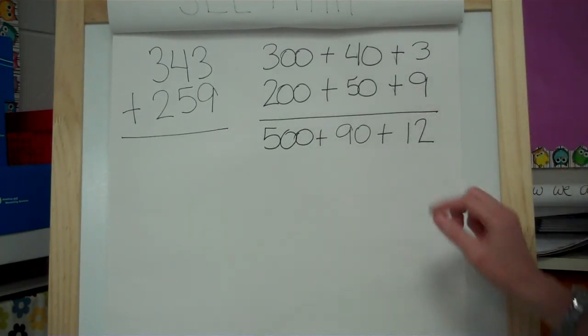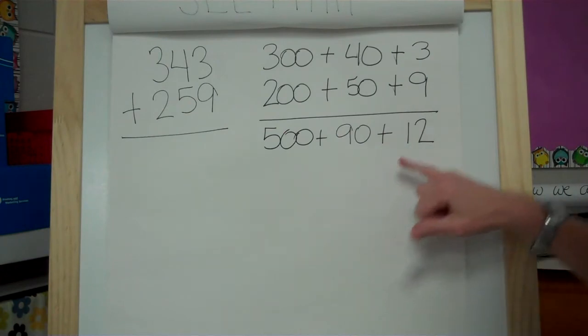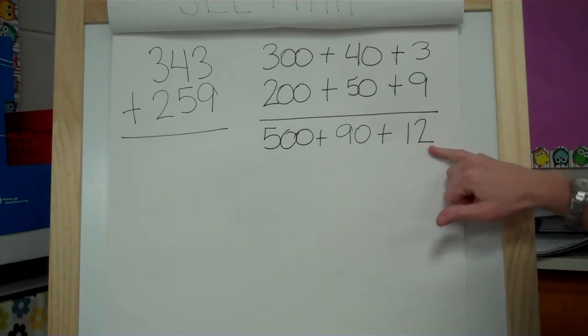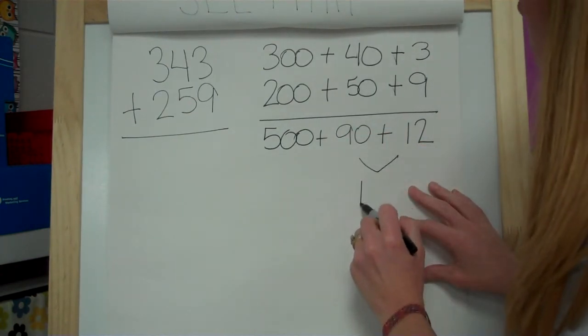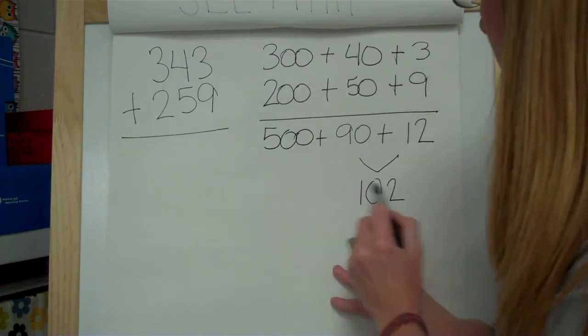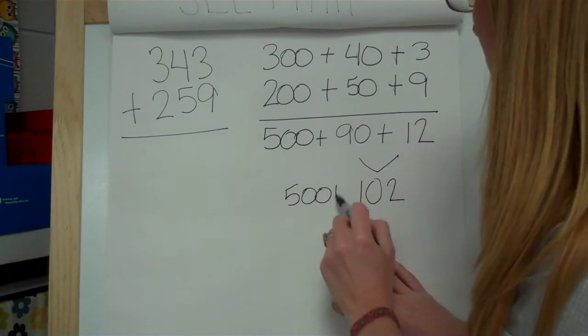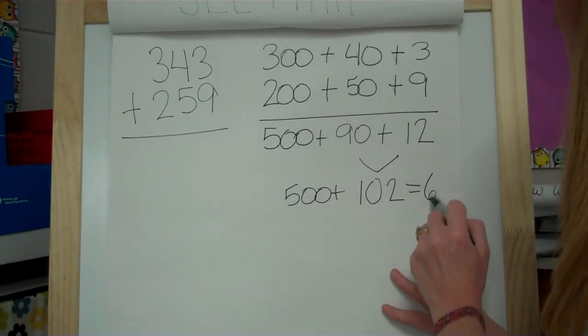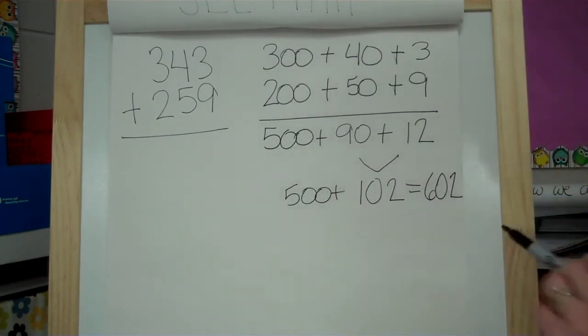Oh, now this one's going to be trickier because we've got some regrouping here. So I'm going to think 90 plus 12, that's going to give me 102. And then I'm going to add that to the 500, and that would give us 602.